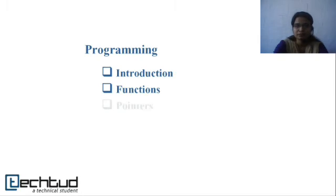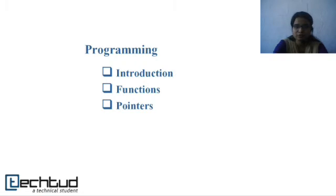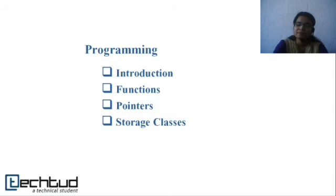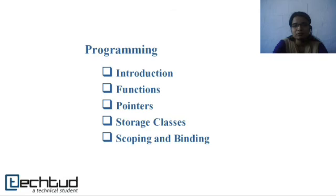Next, we will talk about pointers, where we will be dealing with the address of variables — like how to access and modify values of variables using their address. In the storage classes section, we will learn about different storage specifications possible for variables. And lastly, in scoping and binding, we will learn how the attributes of a variable, like its type or its value, are associated with different parts of a program.